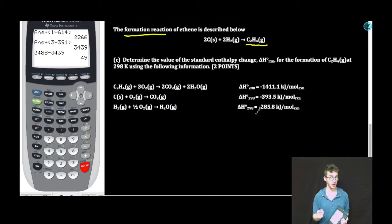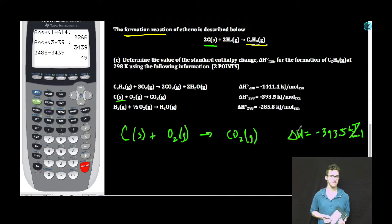We're given a series of equations and their corresponding enthalpy changes at 298 Kelvin. I'm thinking Hess's law. First thing I need is some carbon on the reactant side. As I scan my equations, I notice here's carbon. It's on the reactant side. I'm just going to rewrite that exact equation as it is. And the enthalpy change, double boom.